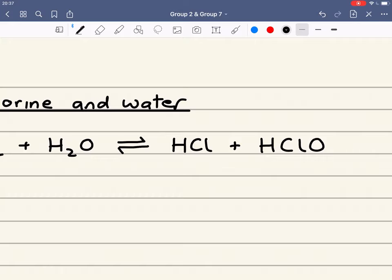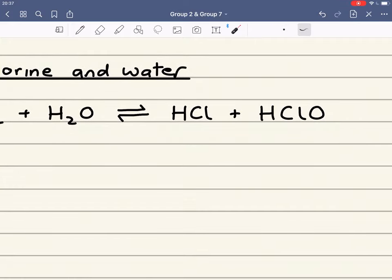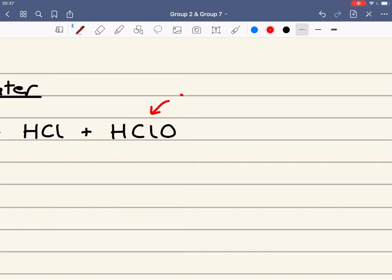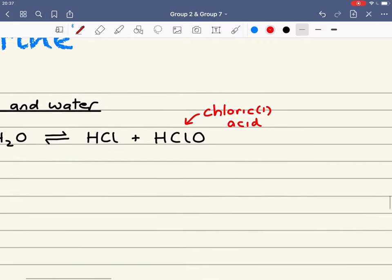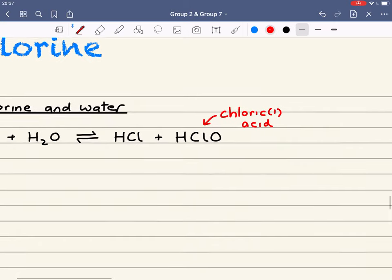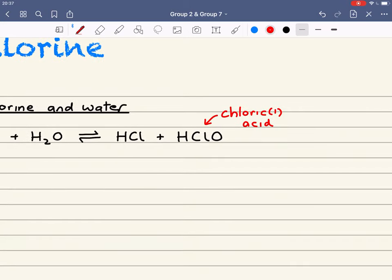Where we get HCl and HClO. We've got here hydrochloric acid. We've got something here called chloric-1 acid. And the 1 is to show that the oxidation state of the chlorine is 1. There are other chloric acids as well where the oxidation state is slightly different.